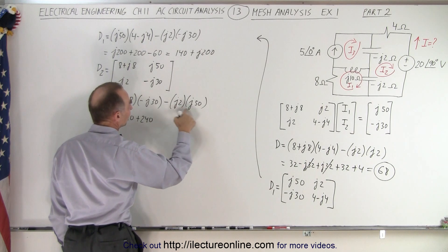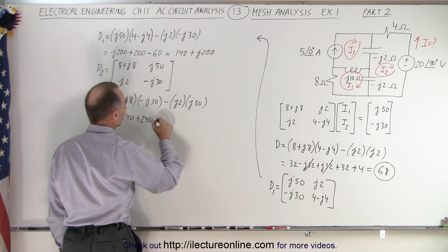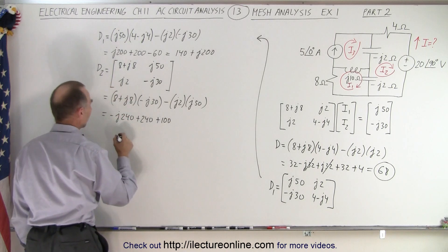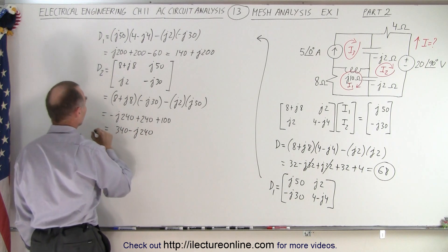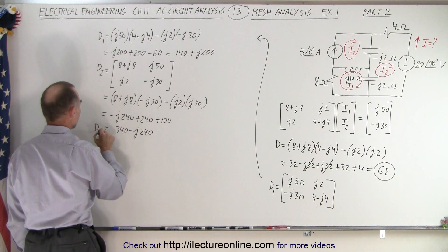And this times this, that's a minus 1, times a minus is plus 1, so plus 100. So in this case that ends up being 340 minus j240. So there's my d3.